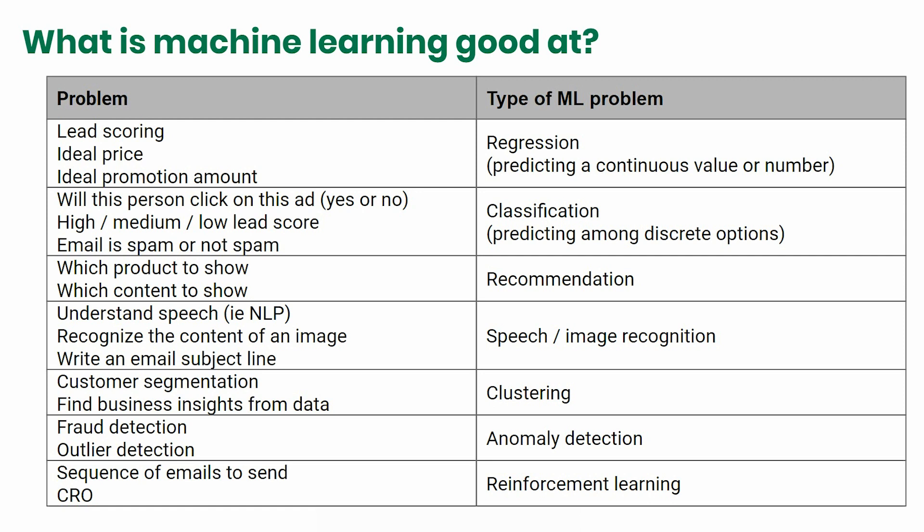Each of these approaches falls under a higher-level branch of the machine learning tree. The first group falls under supervised learning, where you know the answer in advance in the training data. The middle group is unsupervised learning, where you're trying to find patterns in a bunch of data. And finally, reinforcement learning combines aspects of both.